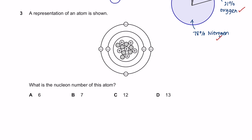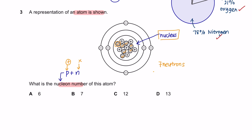Question 3: a representation of an atom is shown. What is the nuclear number of this atom? The nuclear number is the total number of protons plus neutrons in the nucleus of an atom. The center here is the nucleus. Protons are positively charged and neutrons have no charge, meaning the grey particles are the neutrons. Counting: 7 neutrons and 6 protons in the nucleus. Adding them together gives 13. So the answer is D.